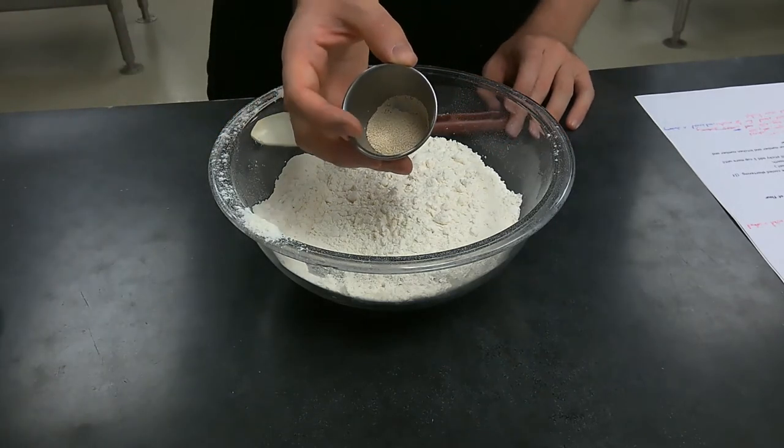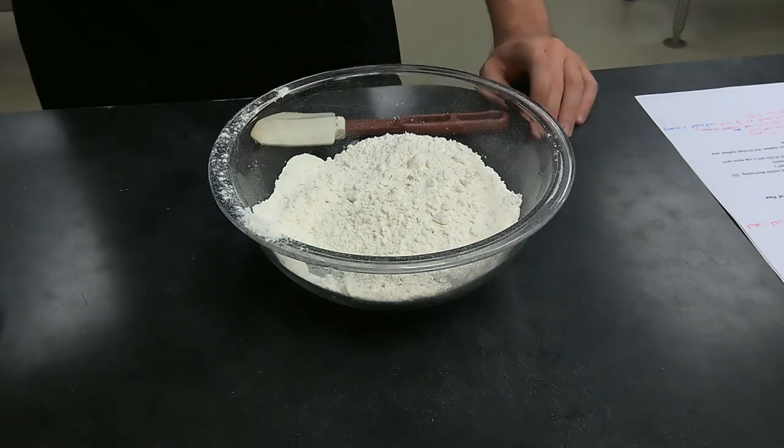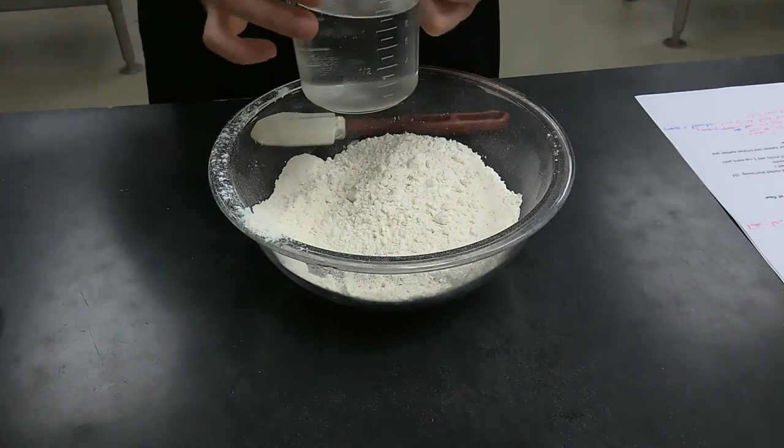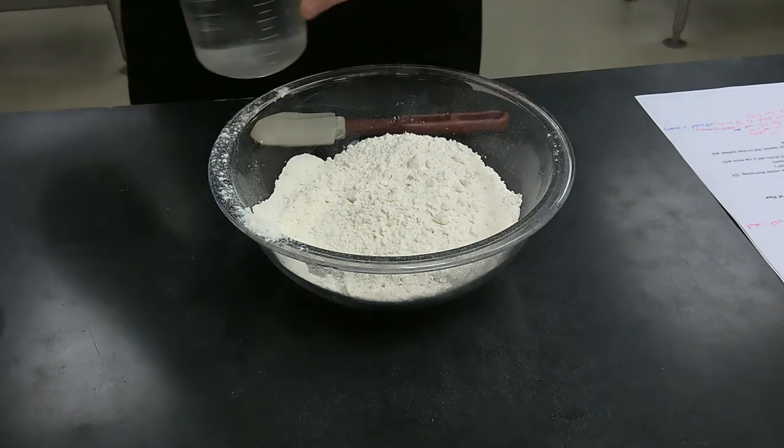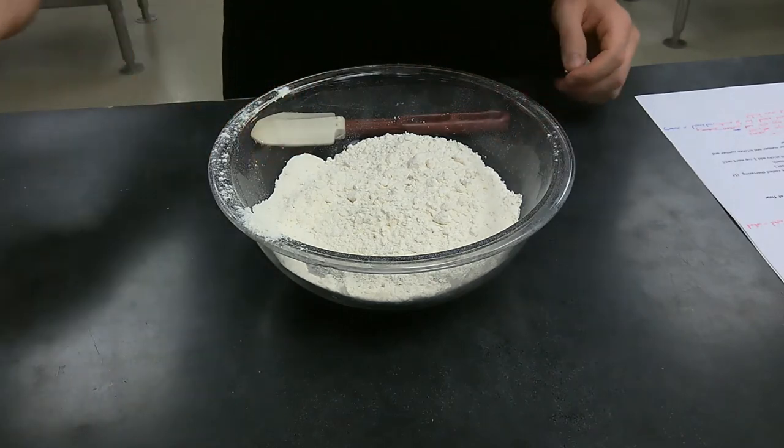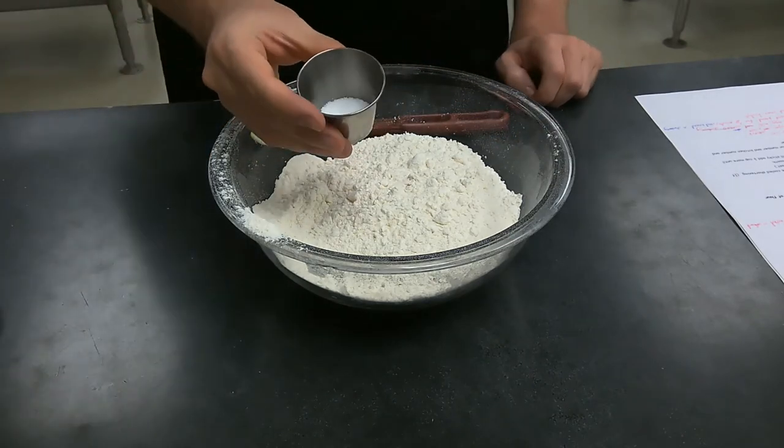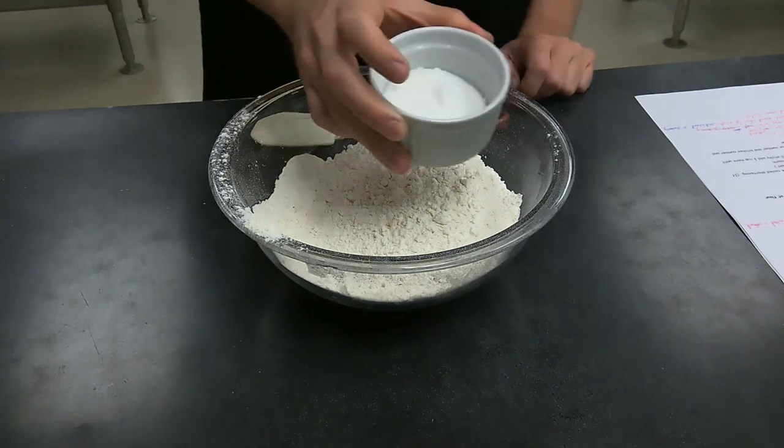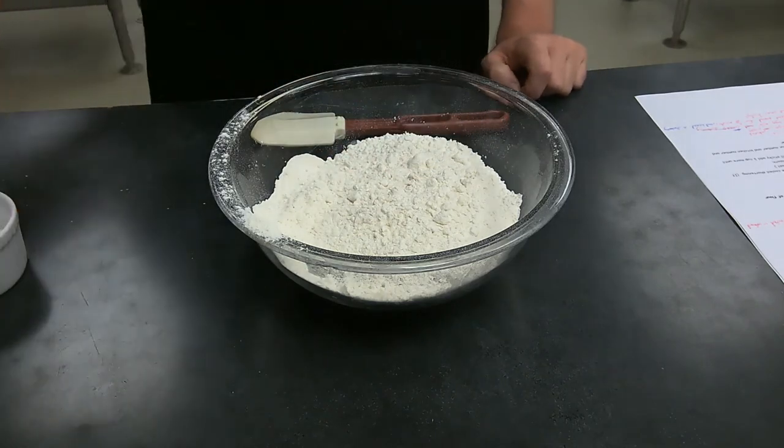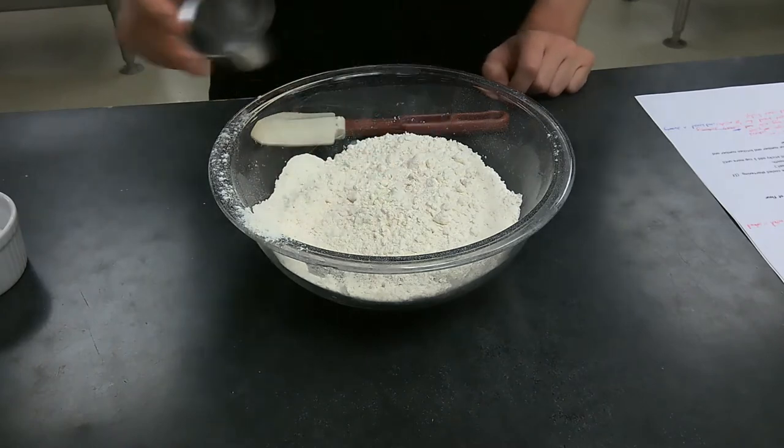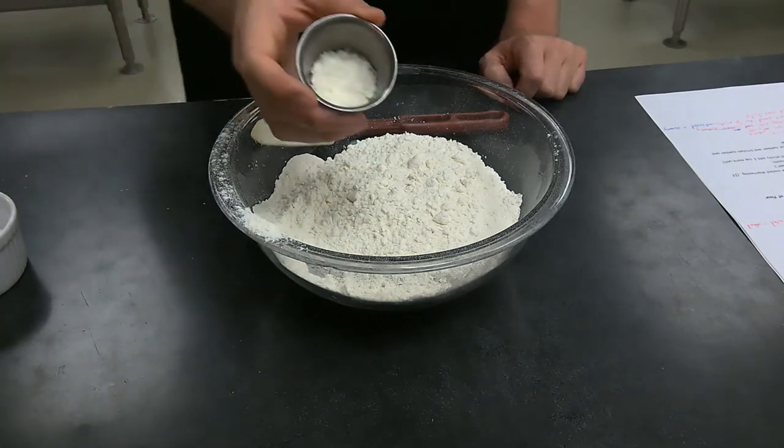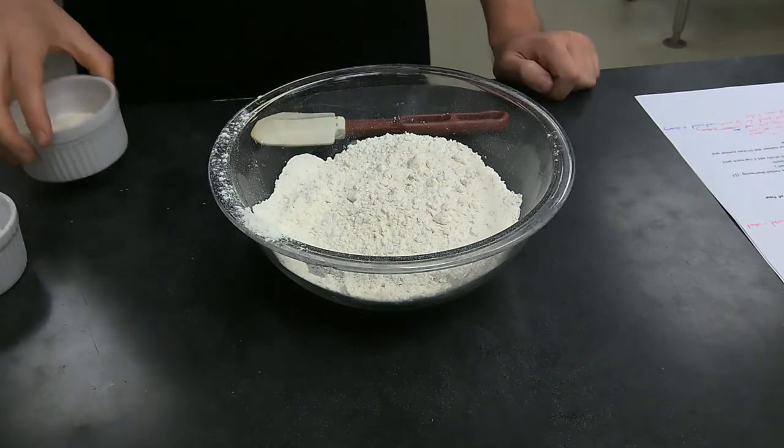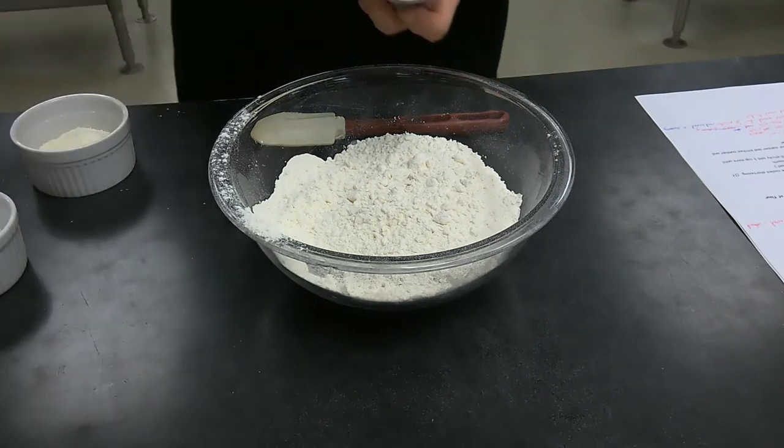It is one and a half teaspoons of active dry yeast, ten ounces of room temperature water. Now this you may need to adjust a little bit depending on how the dough comes together. 0.3 ounces or one and a half teaspoons of kosher salt, 2.2 ounces or a quarter cup of sugar, quarter teaspoon of baking soda, and two tablespoons of the potato flakes.